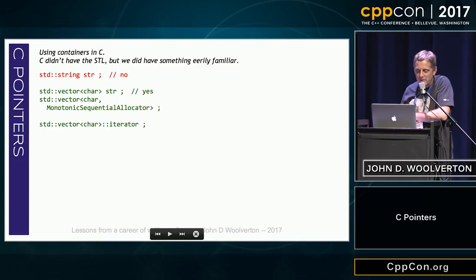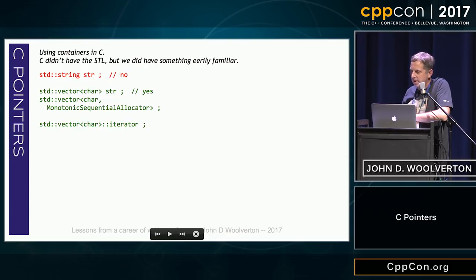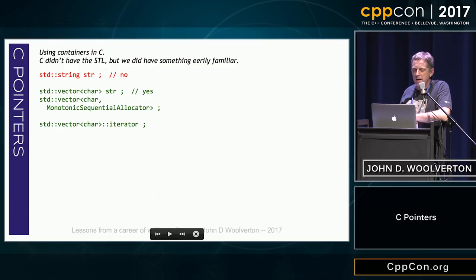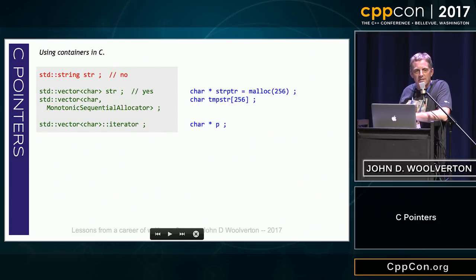Here we go. I started out a long time ago getting used to C. We didn't have containers, but we had something very familiar. We didn't have string, but we had something like a vector of char — a vector of char with a monotonic sequential allocator and an iterator for them. We called them malloc arrays and pointers.